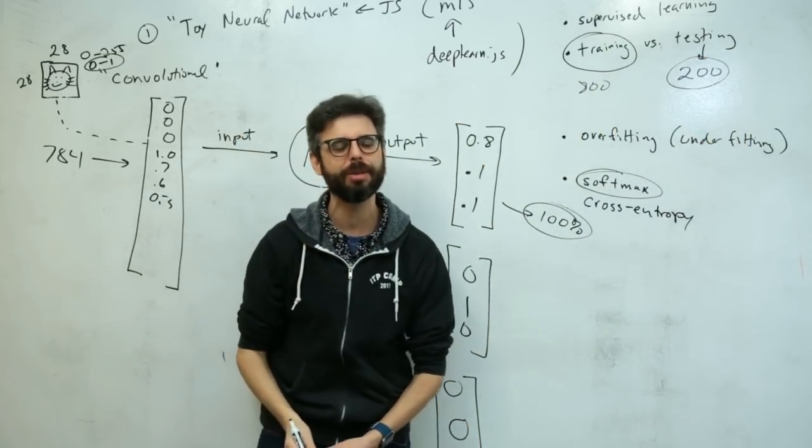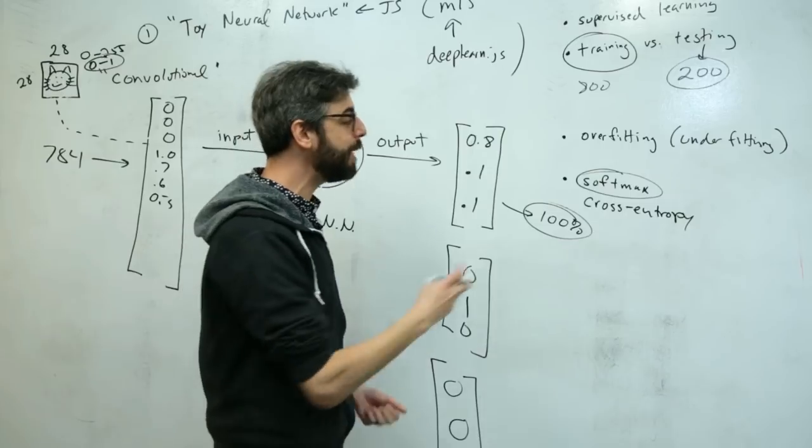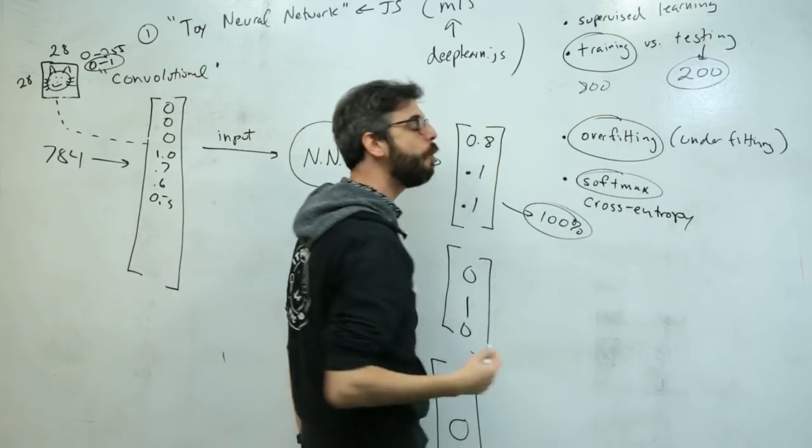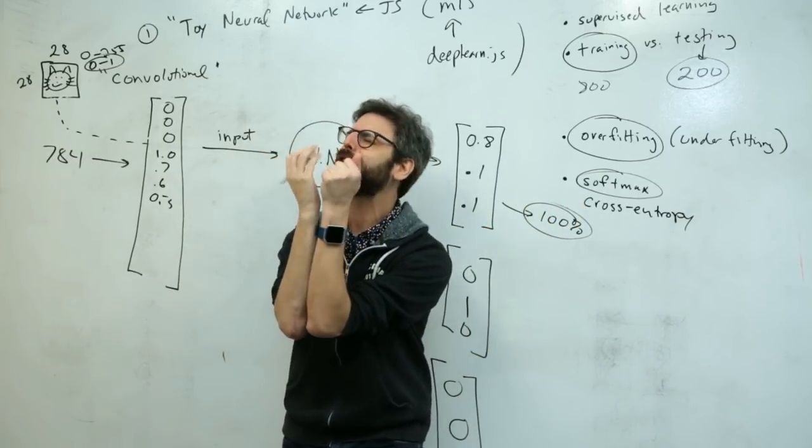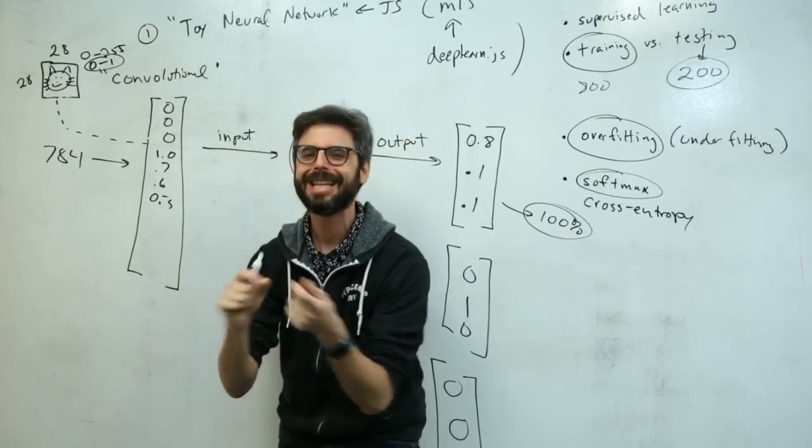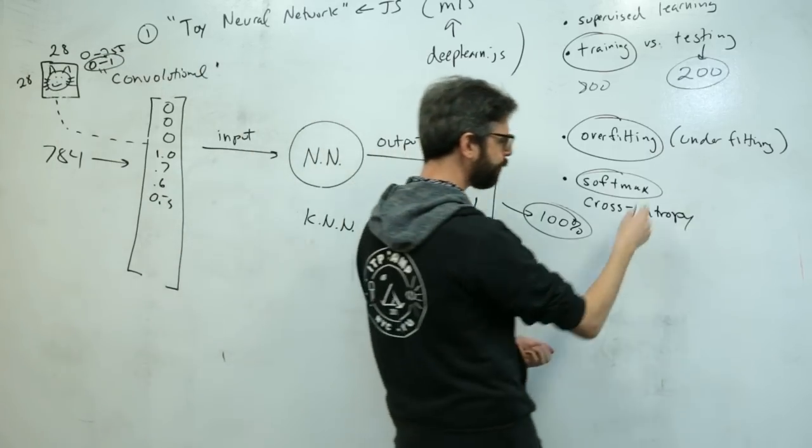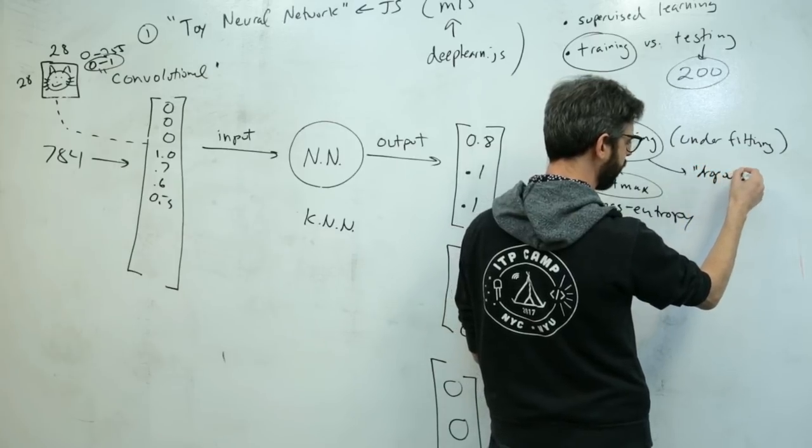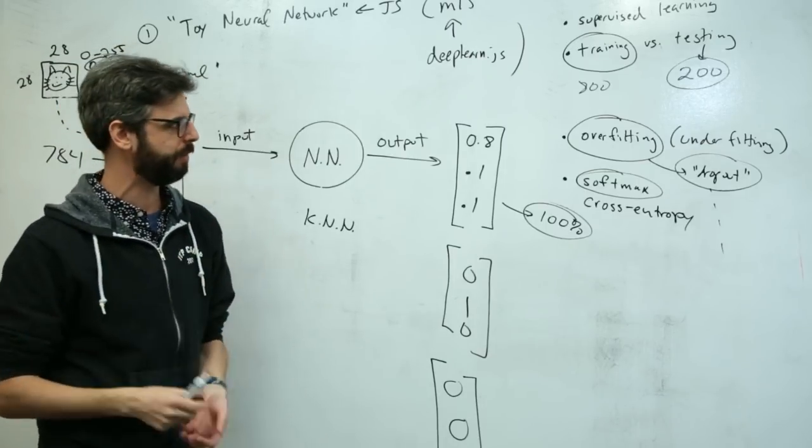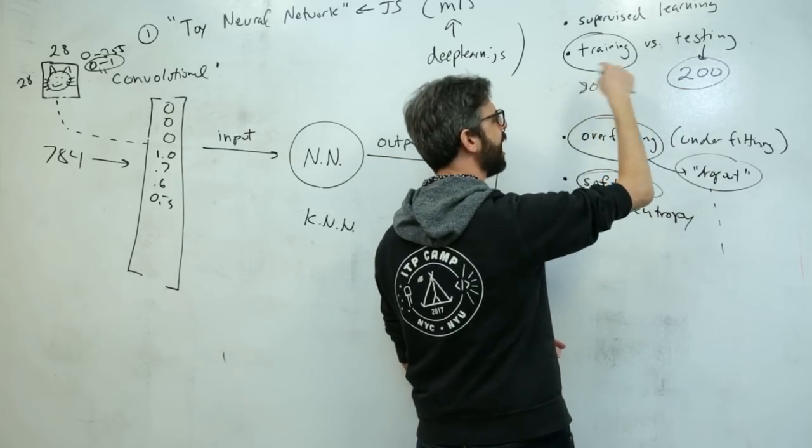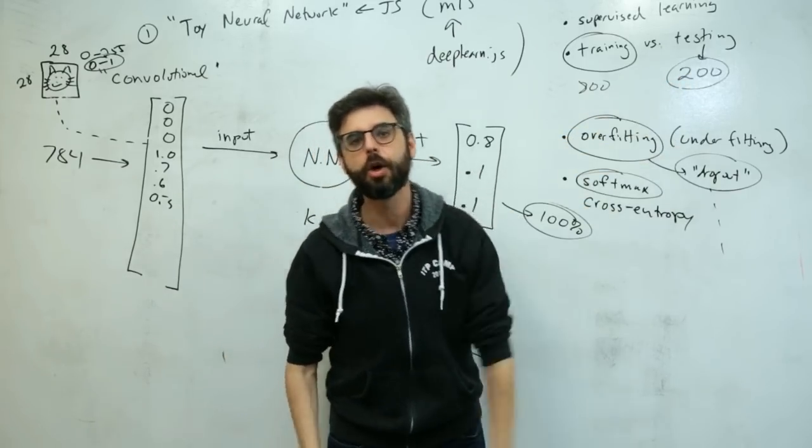So I might save 200 of those drawings and only use 800 in the training process and save 200 of them for testing. How can I know whether my machine learning algorithm is working well? If I just test it to see if it's getting the right answers for the drawings I've trained it with, I might be stuck with something called overfitting. Overfitting refers to when the neural network is so highly optimized and tuned to the stuff that you trained it with that it can't really deal with stuff that it's not trained with.